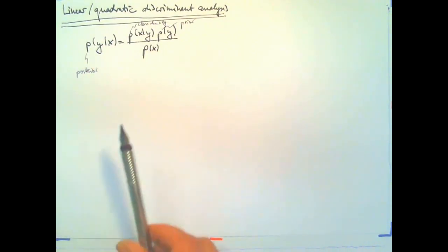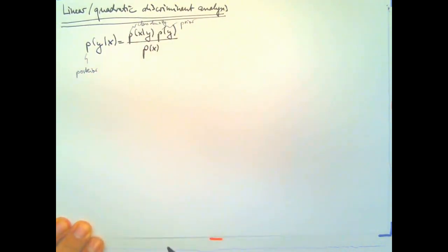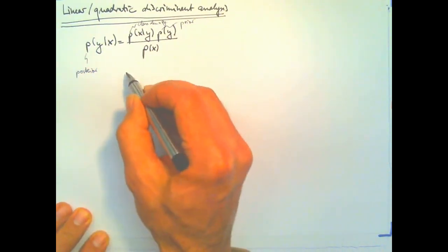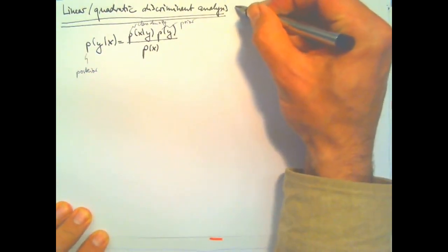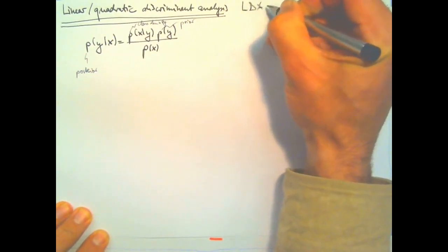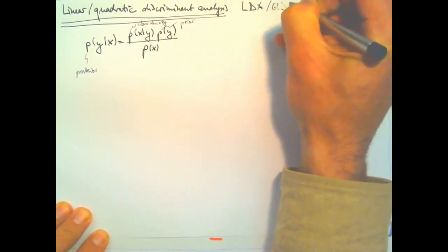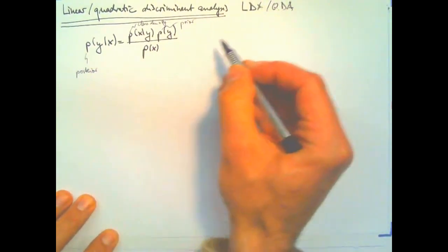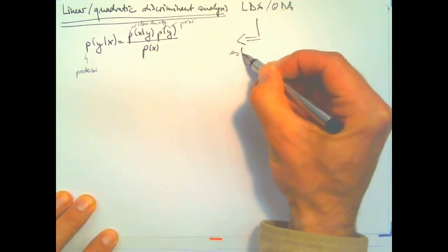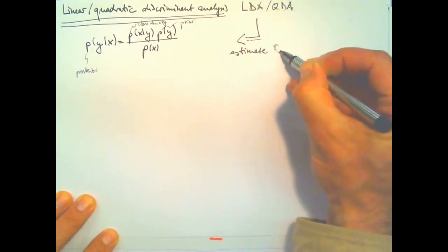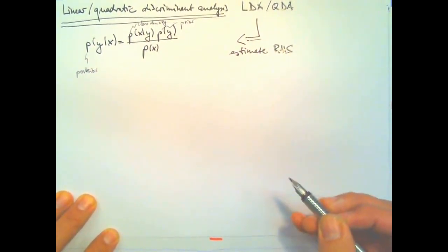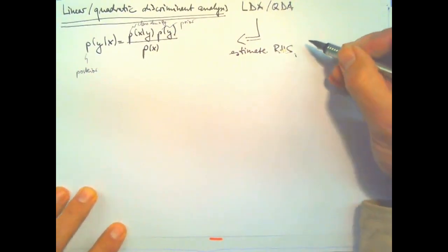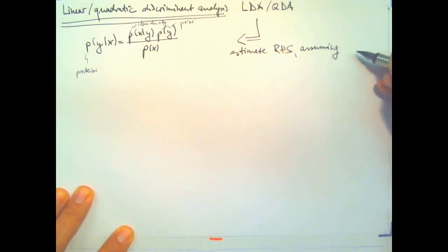Now, the problem was that all of this depended on these unknown quantities and in linear and quadratic discriminant analysis, which are also abbreviated as LDA or QDA, what you do is you estimate the right-hand side of this equation and you make a strong assumption, namely, that the class density is a Gaussian.